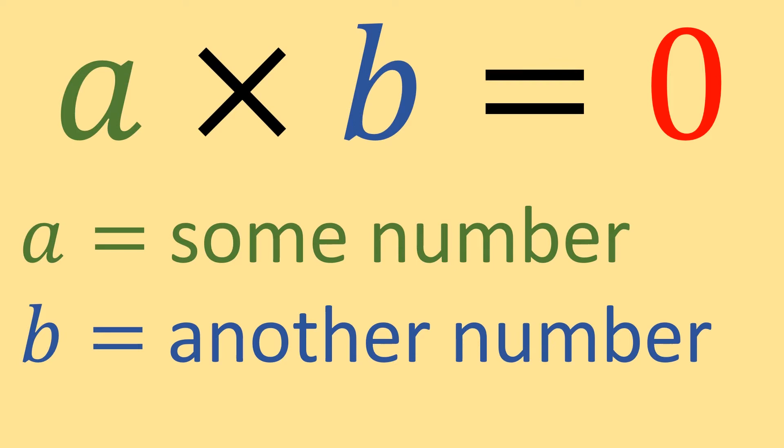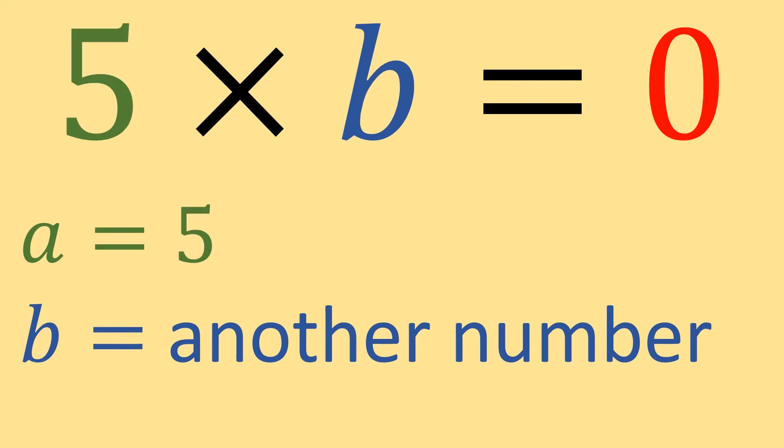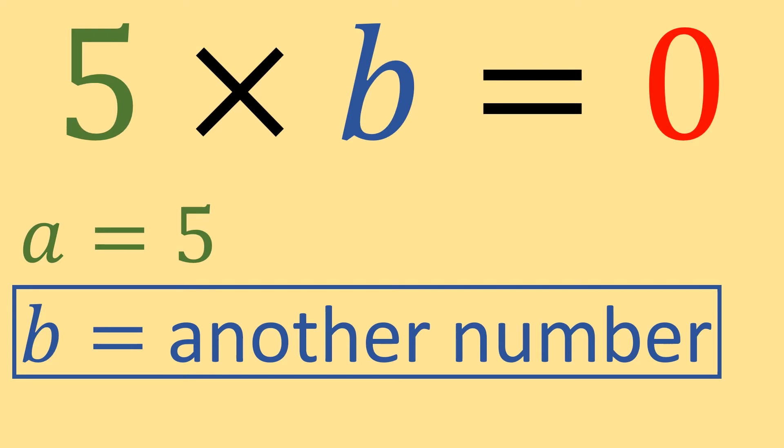If we were to force a to be, say, five, then what value of b would make this equation true? The only possible value of b that would make it true would be b equals zero.